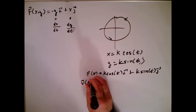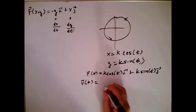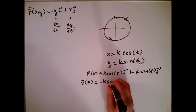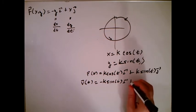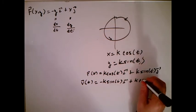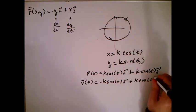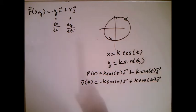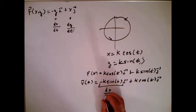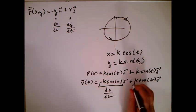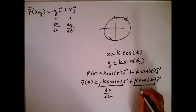We want the velocity equal to, let's see, this is going to be minus k sine t i plus k times cosine t j. And remember, this is what we mean by dx dt. And this is what we mean by dy dt.